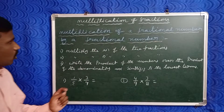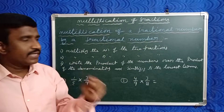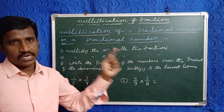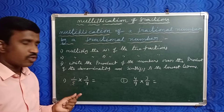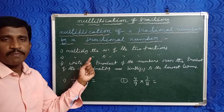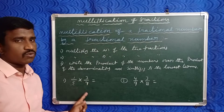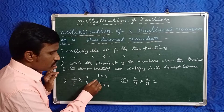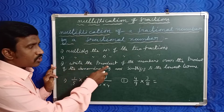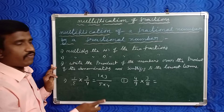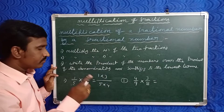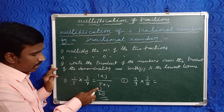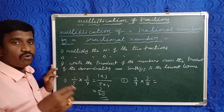Now check the third model: multiplication of a fraction number by a fraction number. Follow three steps. First, multiply the numerators of the two fractions. Second, multiply the denominators. Third, write the product of the numerators over the denominators and simplify to lowest terms. For example: one by five into three by four. One into three is three, five into four is twenty. So the answer is three by twenty. Since three and twenty are co-primes, three by twenty is already in its lowest term.